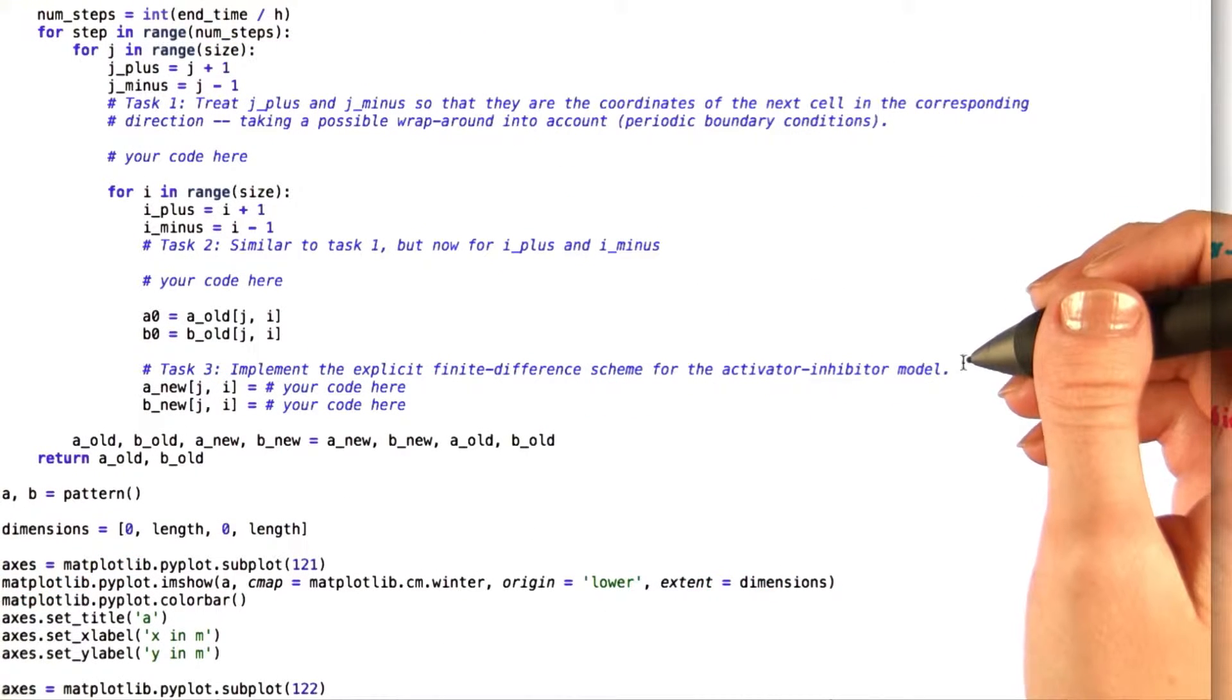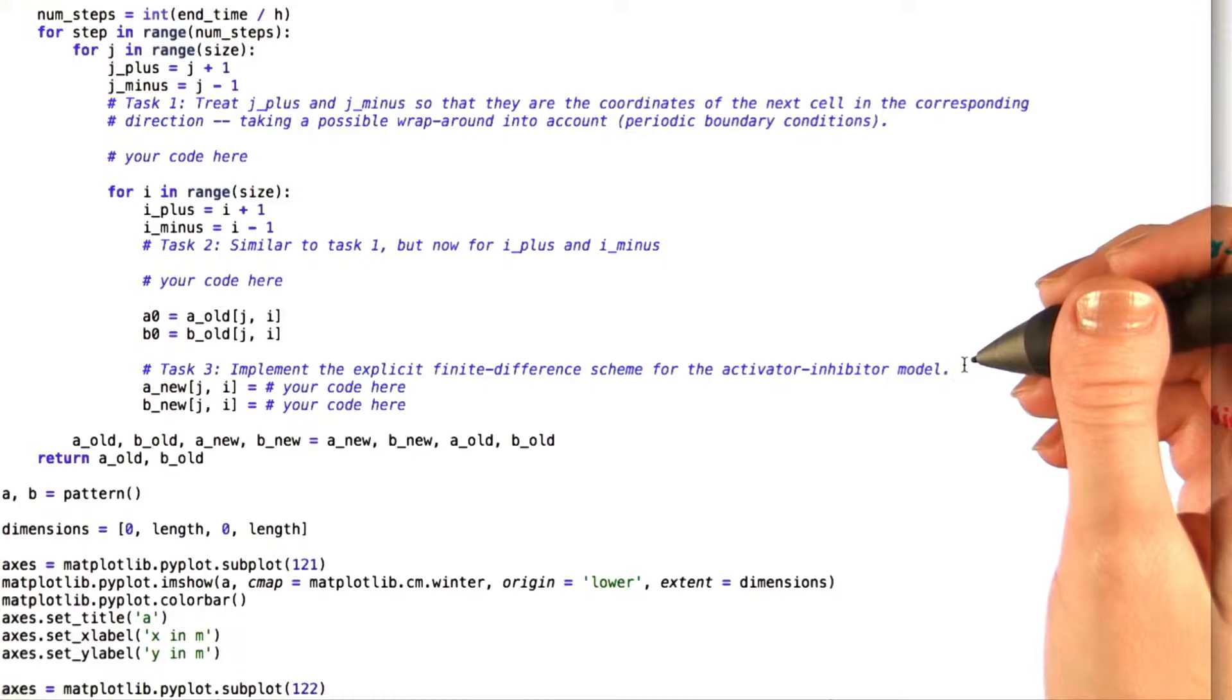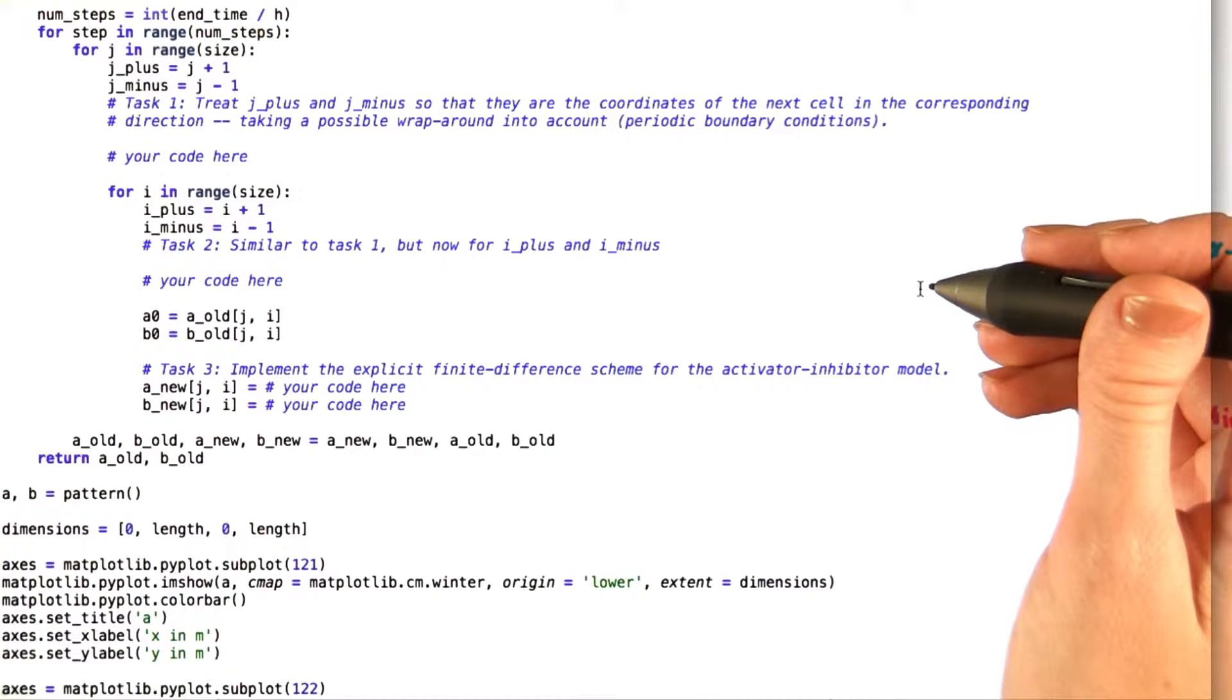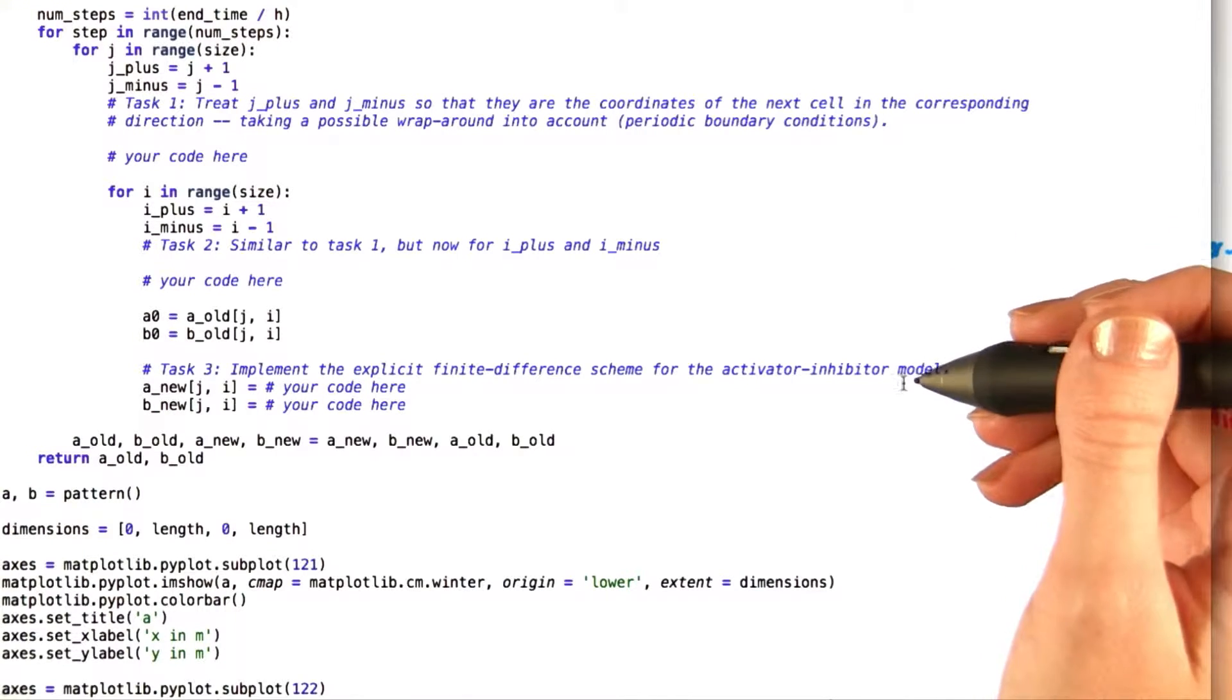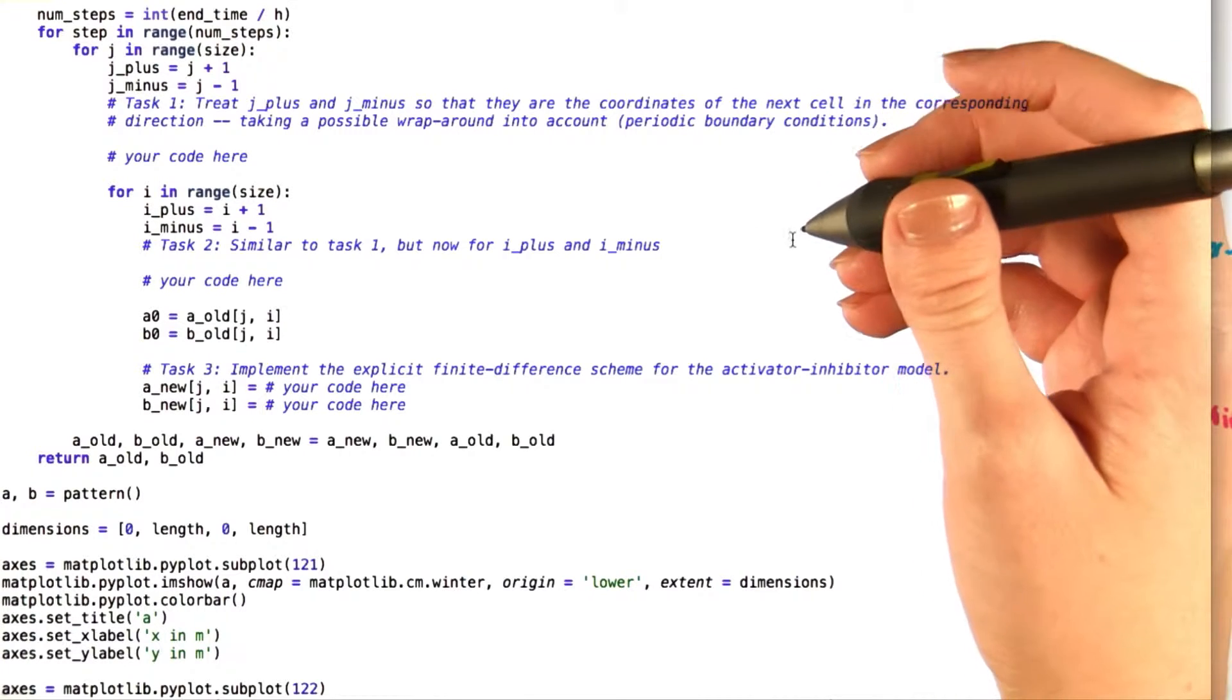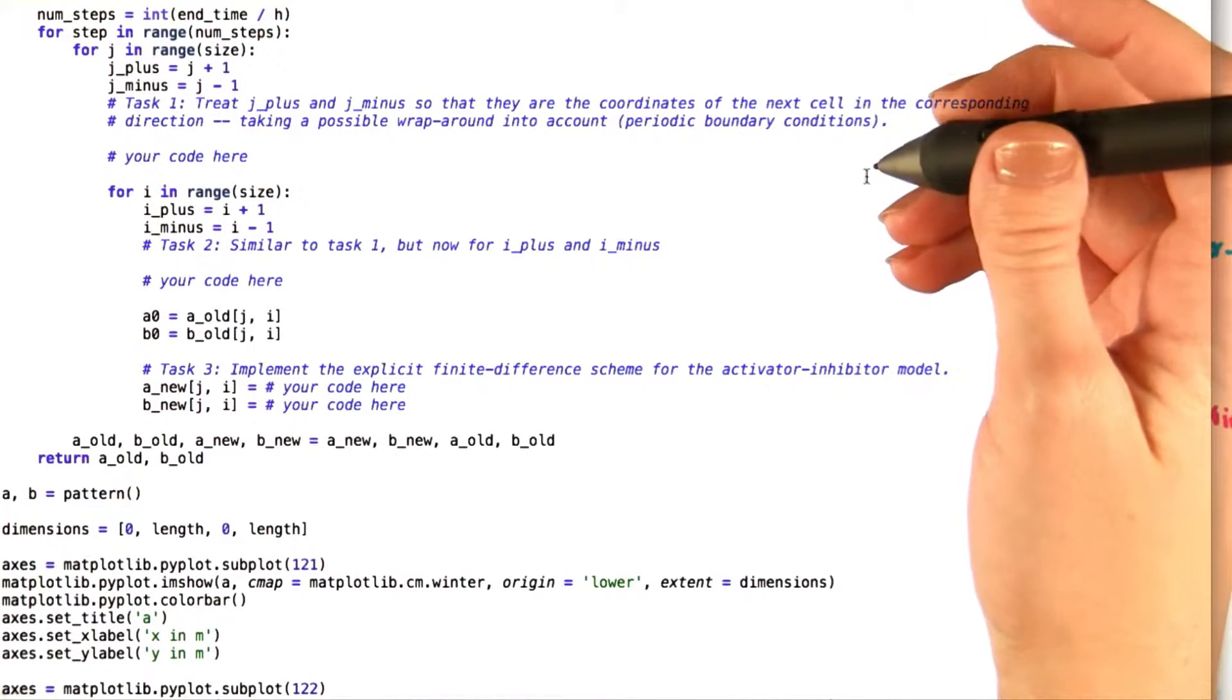Looking at the code, the final task of the problem is actually going to be to use the explicit finite difference scheme for this activator inhibitor model that I just showed you, the equations for dA/dt and dB/dt. However, before you get to that step, there are two other tasks that you must complete. Both task 1 and task 2 concern using periodic boundary conditions.